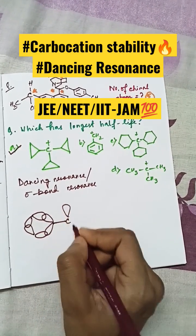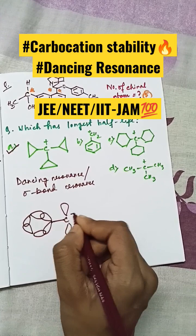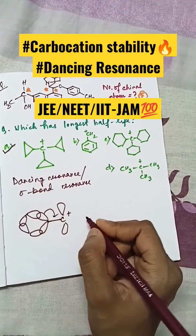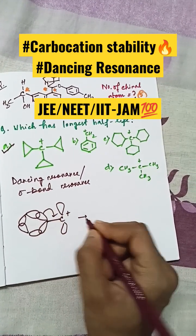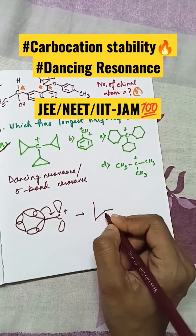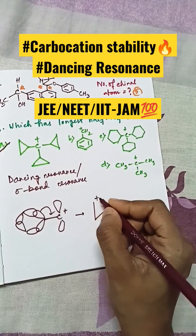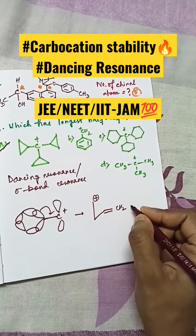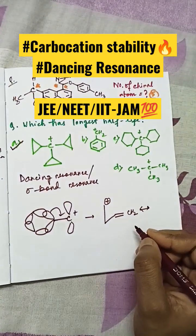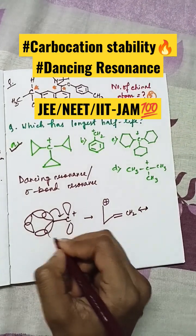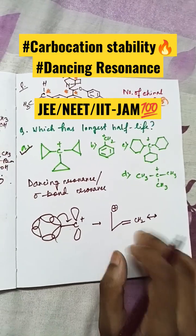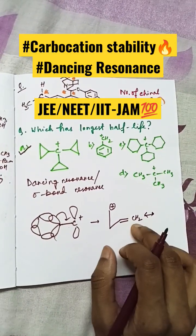The carbocation has a vacant orbital, so delocalization occurs. It will look like this, and similarly there will be many resonance structures. So because of this sigma bond resonance, the carbocation is highly stabilized.